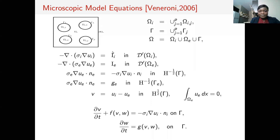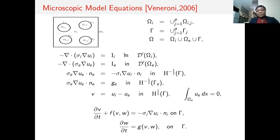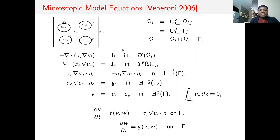Inside the cell, we solve a Poisson equation, and outside the cell we solve another Poisson equation. In these equations, sigma_I is the intracellular conductivity, U_I is the potential inside the cell, and I_I is a given stimulation current applied inside the cell. U_E is the potential outside the cell. At the cellular membrane gamma, we have a flux condition, and at the boundary of the exterior domain, we have a Neumann condition.